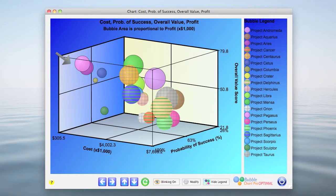In this chart, the most desirable is the front left quadrant. These are projects with the lowest cost, highest probabilities of success, and the highest value scores. The less desirable quadrant is the lower rear quadrant. These are projects with higher costs, lower value scores, and lower probabilities of success.